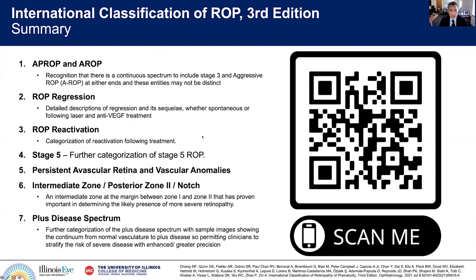In summary, the most relevant and new elements of this update include: the discussion around APROP and AROP; details regarding regression and reactivation of disease; further categorization of stage 5 ROP into 5A, 5B, and 5C; descriptions around persistent avascular retina and vascular anomalies; acknowledgement and description of the notch and posterior zone 2; and very importantly, the plus disease spectrum.